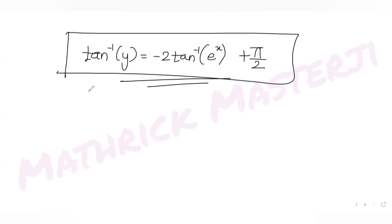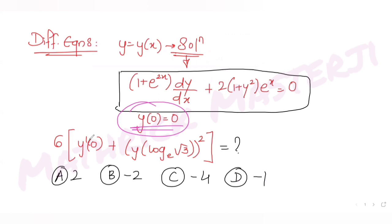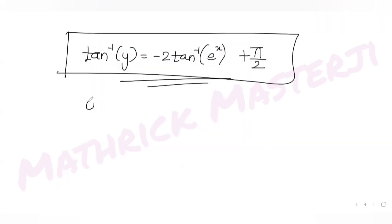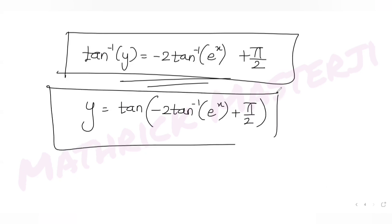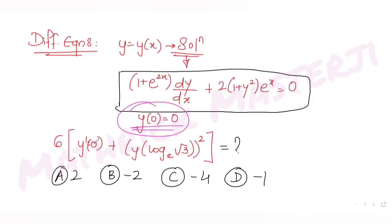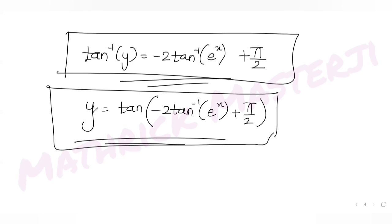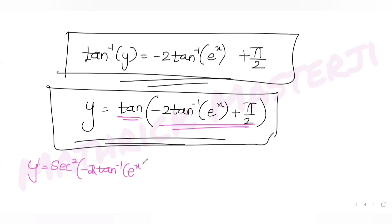The question asks for y'(0) and [y(log√3)]². Writing y explicitly: y = tan(-2·tan⁻¹(e^x) + π/2). Now differentiating with respect to x to find y'.